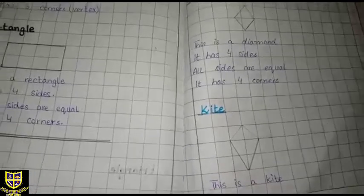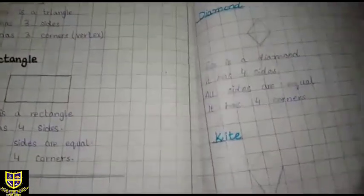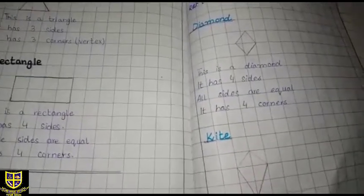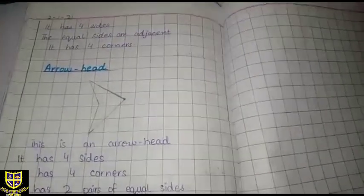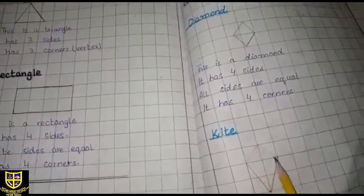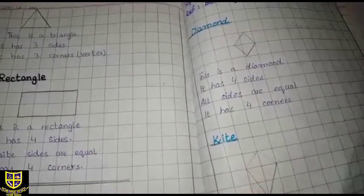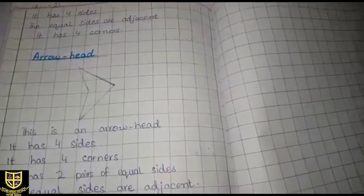This is a kite. It has four sides: one, two, three, four. The equal sides are adjacent. They are close. Equal sides are adjacent. It has four corners.